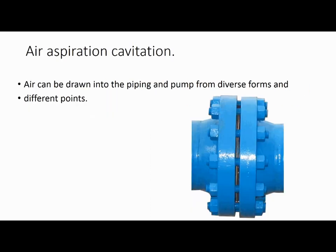Air aspiration cavitation: air can be drawn into the piping and pump from diverse forms and different points. The air can come into the pump through the pump shaft packing, valves and packings in the suction piping, joint rings in the suction piping, flat face sheet gaskets at pipe joints, and threads of fittings and instrumentation in the suction piping.